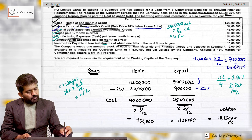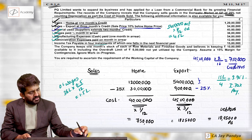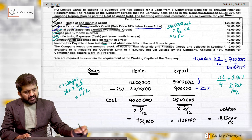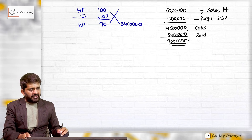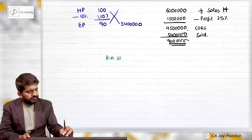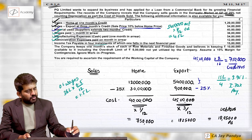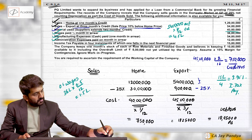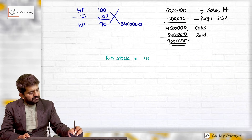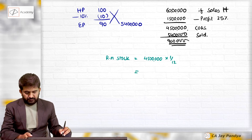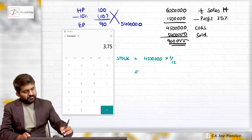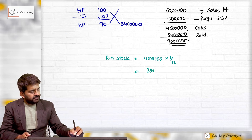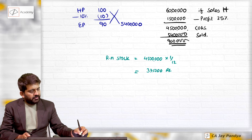The company keeps one month stock of raw material and finished goods. Raw material consumed is 45 lakhs, so raw material stock = 45 lakhs multiplied by 1 divided by 12 = 3 lakh 75,000.